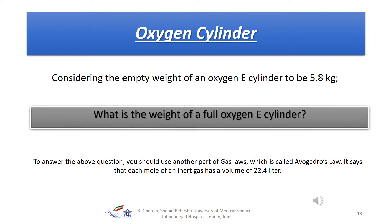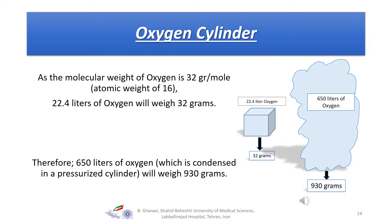Now, I would like you to solve this from a different method. Considering the empty weight of an oxygen E cylinder is 5.8 kilograms, what is the weight of a full oxygen E cylinder? To answer this, you should know Avogadro's law: each mole of an inert gas has a volume of 22.4 liters. Since the molecular weight of oxygen is 32 grams per mole, each 32 grams of oxygen has a volume of 22.4 liters. When you have 650 liters of oxygen, it weighs approximately 930 grams.